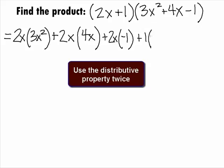Distributing the 1 times every term of the second parenthesis, we get 1 times 3x squared plus 1 times that second term of 4x plus 1 times that third term of negative 1.